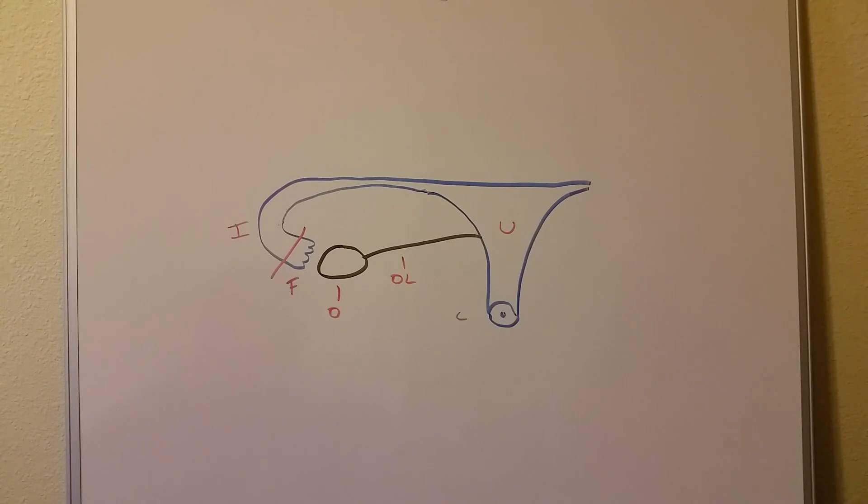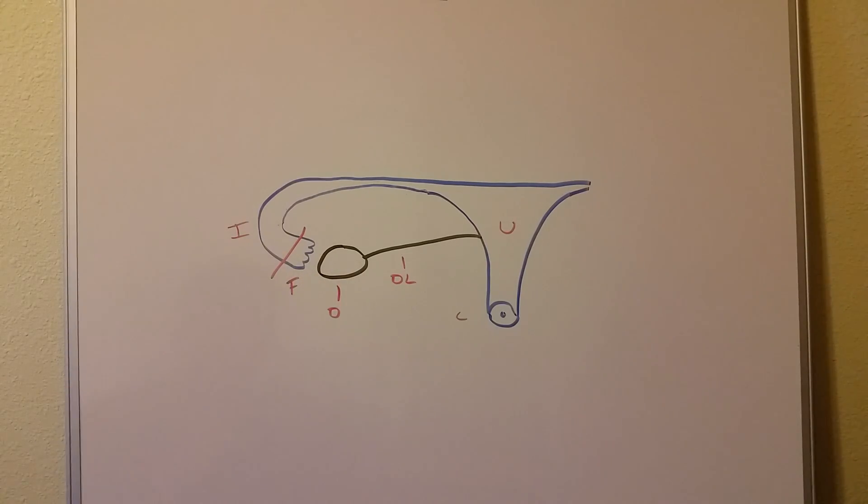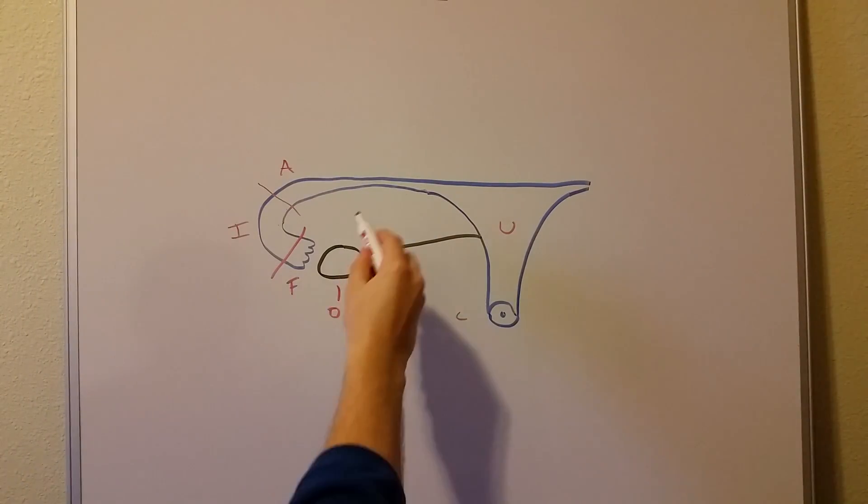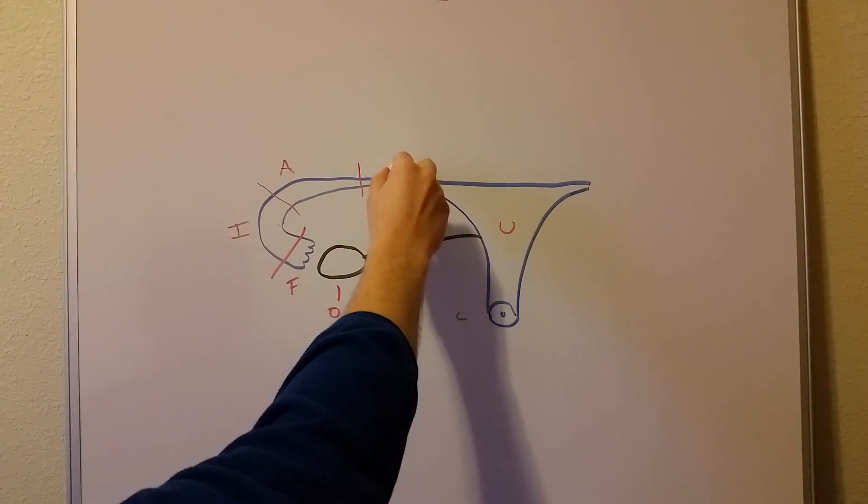There's infundibulums all over the body. So we have like the pituitary, the infundibulum attaching the hypothalamus down to the pituitary, all sorts of infundibulums. This one is going to be the infundibular portion of the fallopian tubes, the second portion after the fimbriae. Next, we're going to move into the ampulla. And the last one we're going to talk about today that's really important is the isthmus.